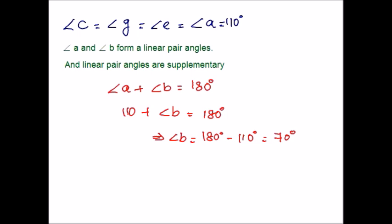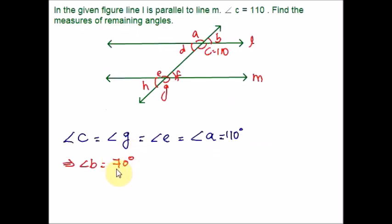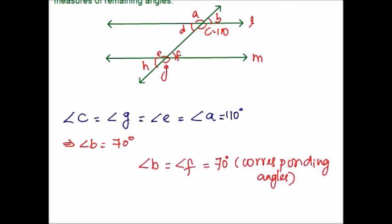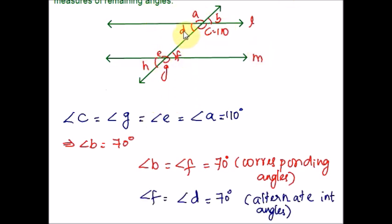Now let us check the corresponding angle for B. F is the corresponding angle for B, so angle B equals angle F because corresponding angles are congruent. Similarly, angle F equals angle D because these two are alternate interior angles. Angle D and angle H are corresponding angles, so angle H equals angle D, which is 70 degrees. Therefore angle H is also 70 degrees.